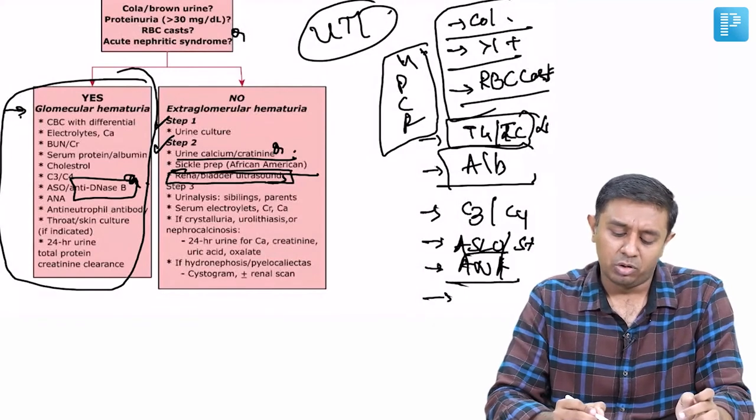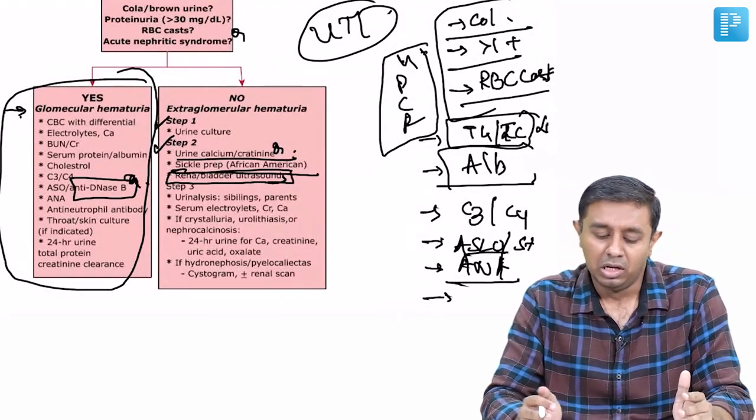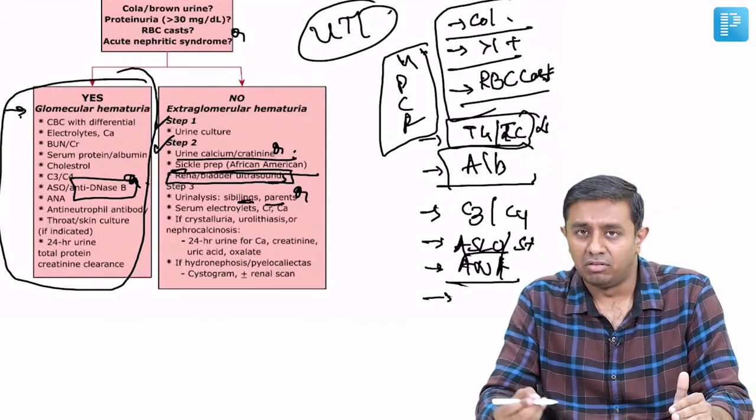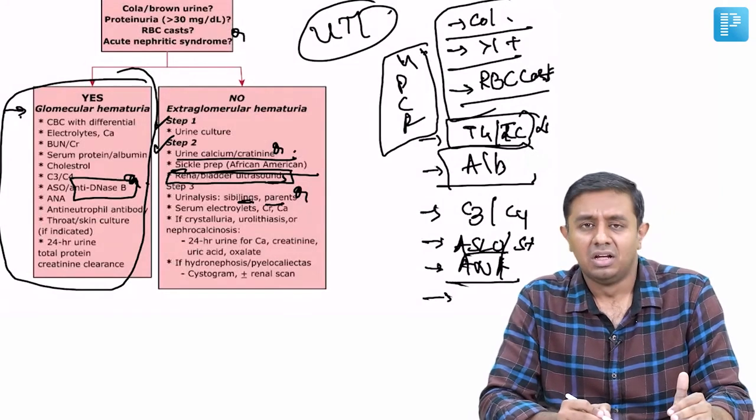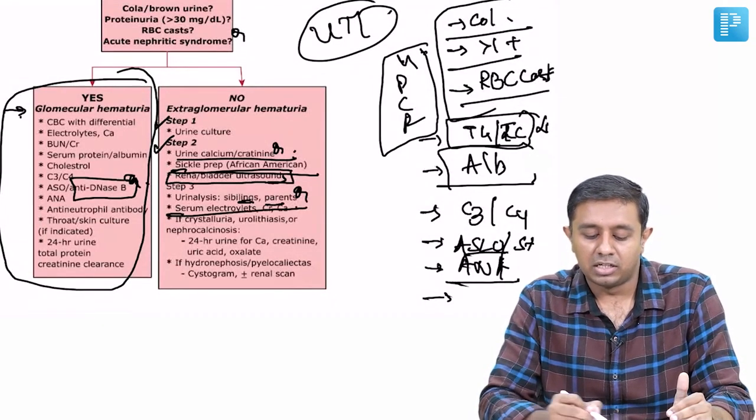In the third step, we would be looking at the more rarer causes. That is the urine analysis of the siblings and parents, and other set of investigations which will help you establish the cause: electrolytes, creatinine, calcium, and 24-hour urine.